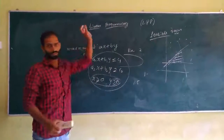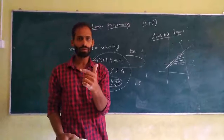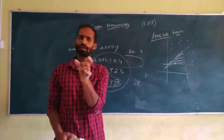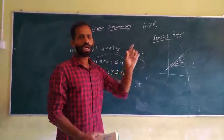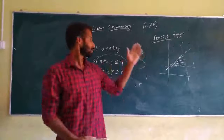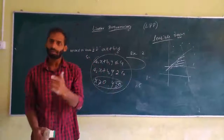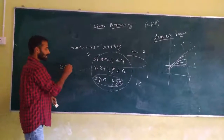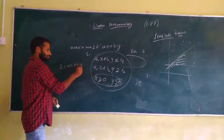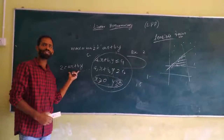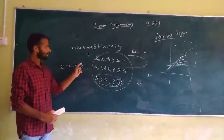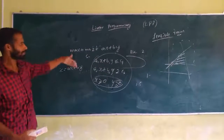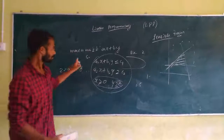The definition of a linear programming problem is: it is the problem of finding the maximum or minimum value of an objective function. The objective function means a linear function z equals ax plus by, which has to be maximized or minimized. That is called the objective function.